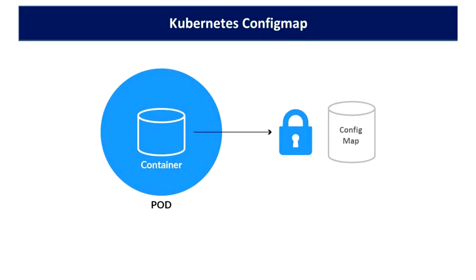Kubernetes ConfigMap is a type of resource. We will also talk about Kubernetes Secrets to store sensitive data. The ConfigMap allows you to create a configuration map externally and reference it from your containers.